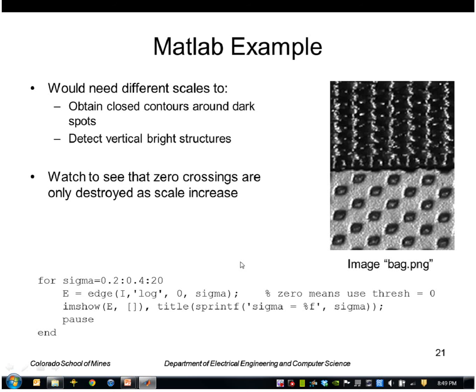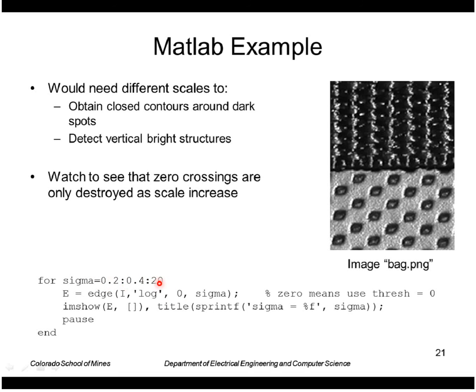Let's do an example where we apply Laplacian of a Gaussian to an image. This image has structures of different sizes, and we'll use MATLAB's edge function in which you can specify to do a Laplacian of a Gaussian. The zero indicates use a threshold of zero, meaning detect all zero crossings, and we'll vary Sigma from 0.2 to 20.